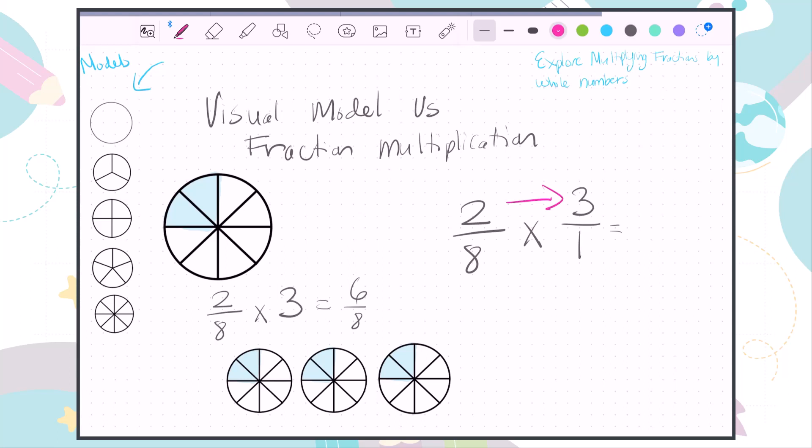And then we know fraction multiplication really well. When you have two fractions, you multiply the numerators. So 2 times 3 is 6, and then you multiply the denominators: 8 times 1 is 8. And hey look, 2/8 times 3/1, or three firsts, three wholes, is 6/8. Isn't that cool?